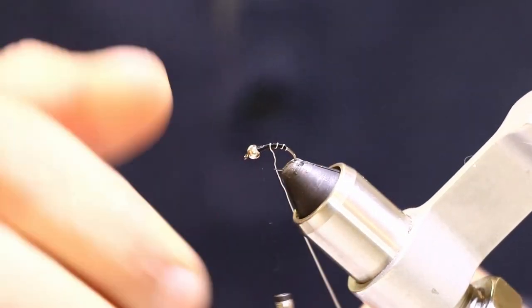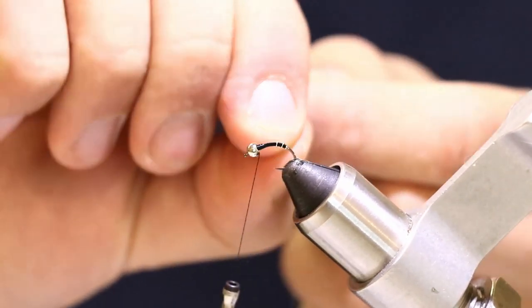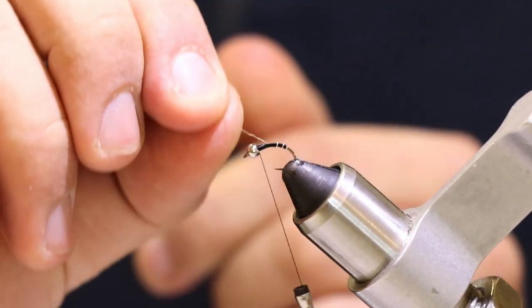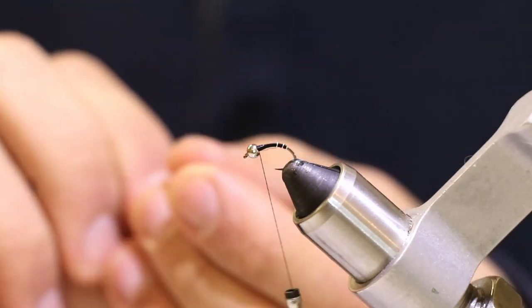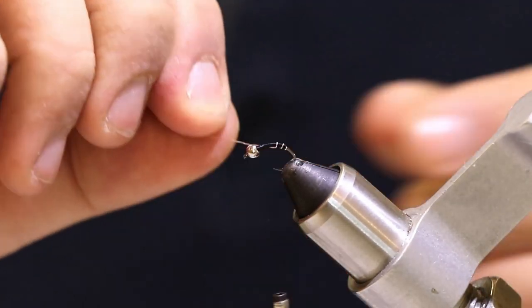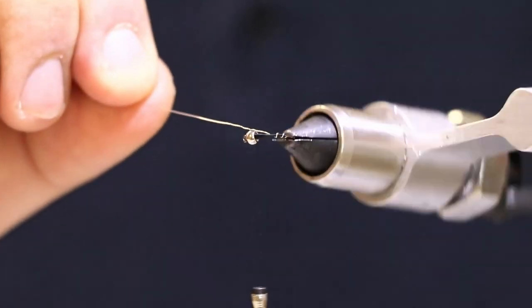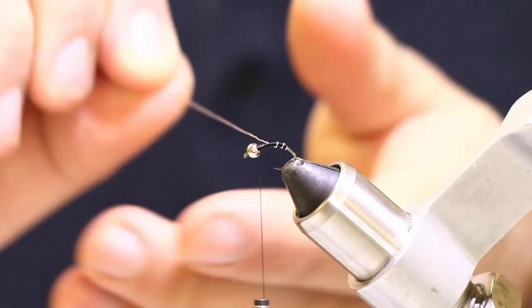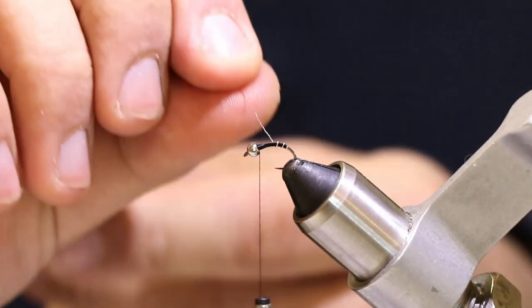So we're going to wrap our wire back where we were but to evenly space them out it just takes practice. But also too you can use your vice to spin the vice around to do that. I just personally just like using my hands.